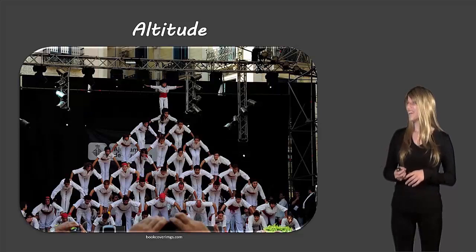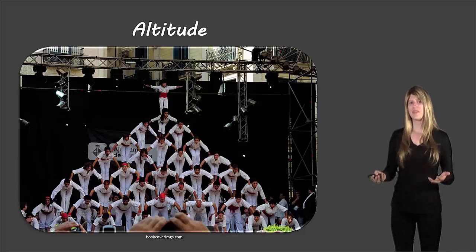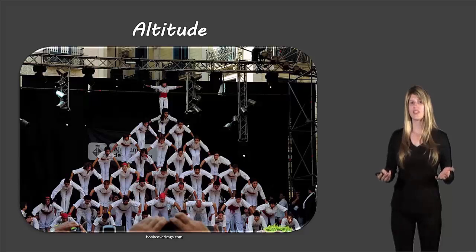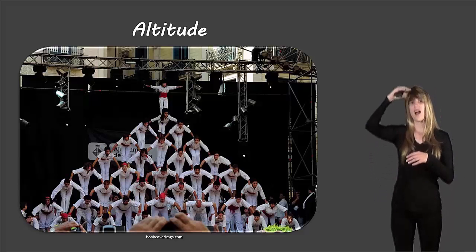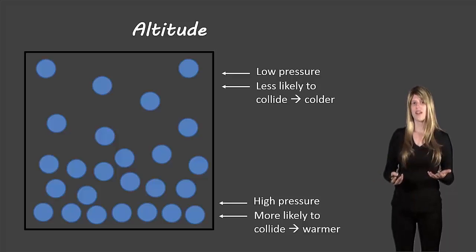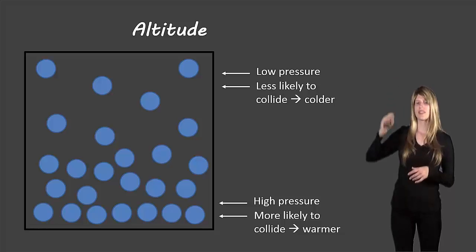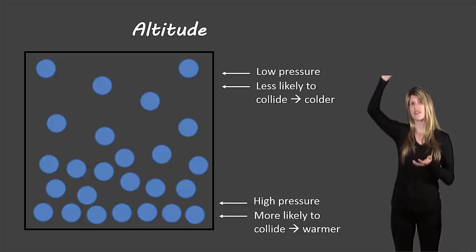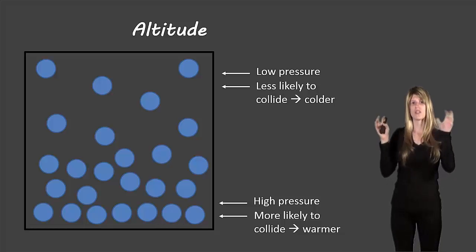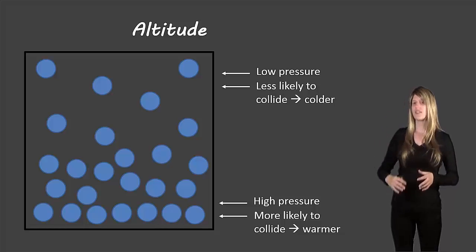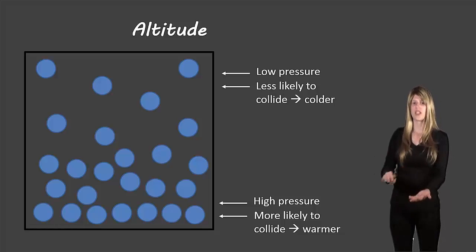The next effect is altitude. Think about a group of people stacked on top of each other — the person at the top would feel the least pressure because nobody is pushing down on them, while the people on the bottom row feel a lot more pressure from the weight of everyone above. It's the same with air: towards the top of a mountain there's much lower air pressure because there's less air pushing down on it. This lower air pressure means molecules are less likely to collide, making it cooler. Lower down, the air molecules are closer together, more likely to bump into each other, which makes it warmer.